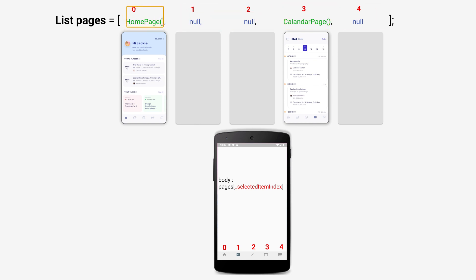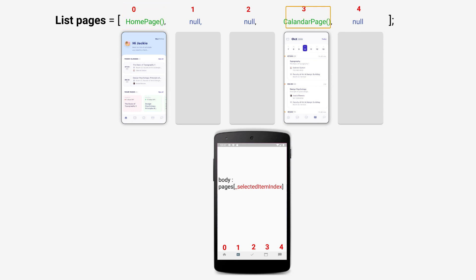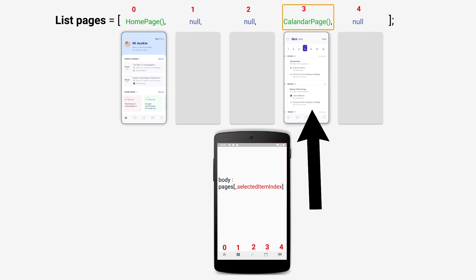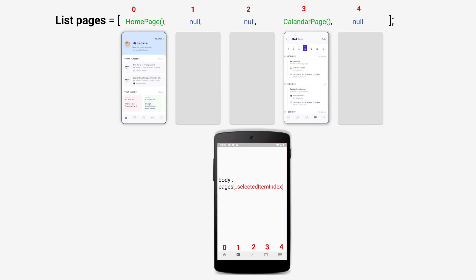For example, the first item with index 0 is the homepage class that is responsible to build this screen. The same way, the fourth item with index 3 is the calendar page class that we just created — it will be responsible to build this screen. Since we will not build all the pages of this app, we put null for the other pages. Now, the bottom navigation bar has the same structure: 5 items, each one with an index from 0 to 4.